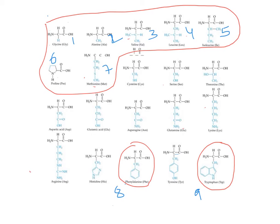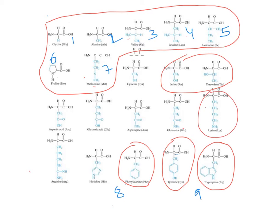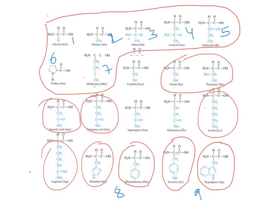The hydrophilic amino acids include the three hydroxyl-containing amino acids (serine, threonine, tyrosine), three basic amino acids (lysine, arginine, histidine), two acidic amino acids (aspartic acid, glutamic acid), and the neutral polar amino acids (cysteine, asparagine, glutamine — all polar and uncharged).